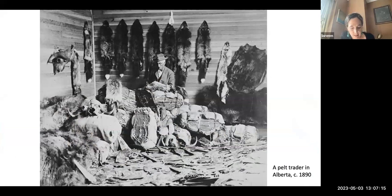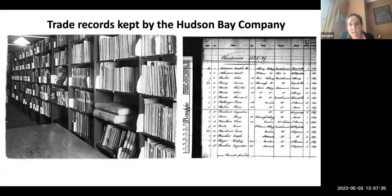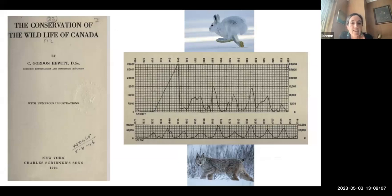So how do we know about numbers of lynx and hare in the middle of the 19th century? It's because of their pelts — they were part of a really high-value trade in North America. The records of that trade were kept by Hudson Bay Company and others and can be found in archives. These trade records were first accessed and published by ecologists in the 1920s in the book 'The Conservation of the Wildlife of Canada,' published in 1921.